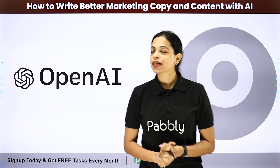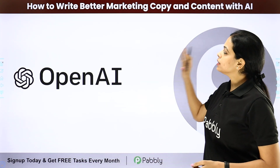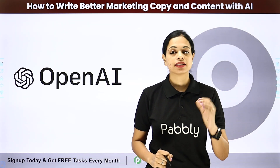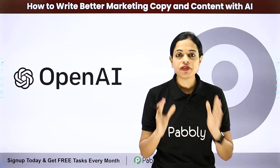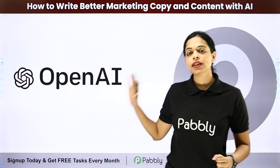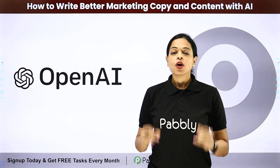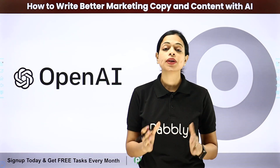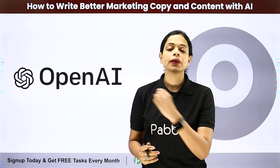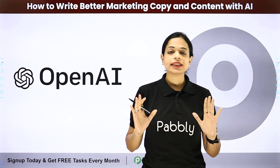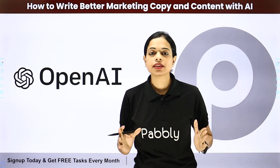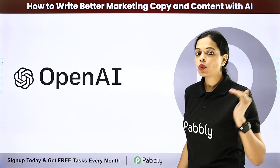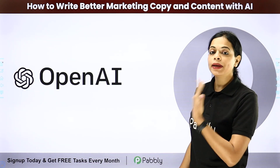Hey everyone, in this video I'm going to tell you how to write better marketing copy and content with artificial intelligence. We know that artificial intelligence is at its boom and this is the perfect opportunity to talk about one of the most renowned applications which is OpenAI. OpenAI is an artificial intelligence and deployment company that helps you in generating content and images within the blink of a second. You do not have to waste any time, and for all the content creators out there, this is definitely a boon for us. I'm going to take certain examples to help you understand how you can create better marketing copies.